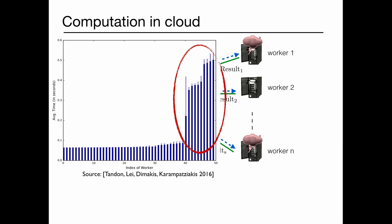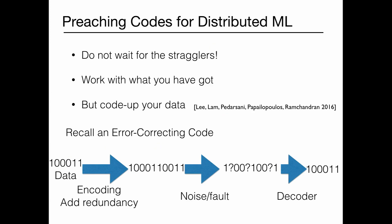What's the idea to mitigate that? You do not wait for the stragglers, just work with whatever you've got. But before you distribute the data to the workers, you should code up your data. That's the idea presented in this paper by Lee and others. What do we mean by coding up your data? It just means simply use an error correcting code to encode your data.